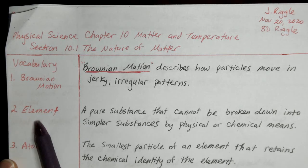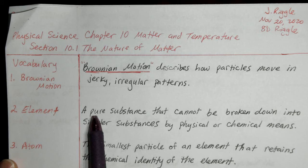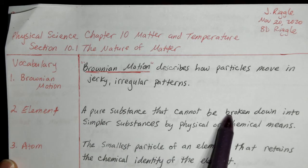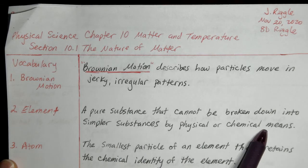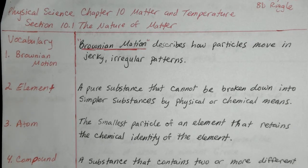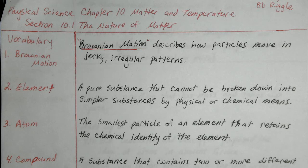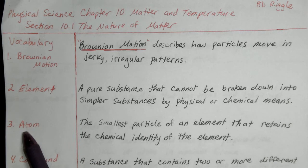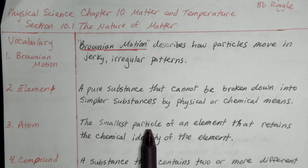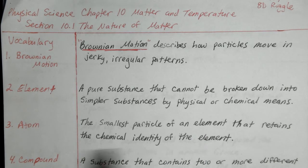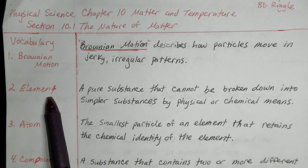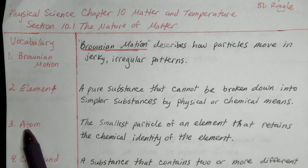Number two, element. An element is a pure substance that cannot be broken down into simpler substances by physical or chemical means — so an element is as good as it gets. If you break it down into something else, it would completely change; it would not be that element anymore. An atom is the smallest particle of an element that retains the chemical identity of that element — the very smallest piece of an element. You cannot break it down beyond that and still keep it as an element.